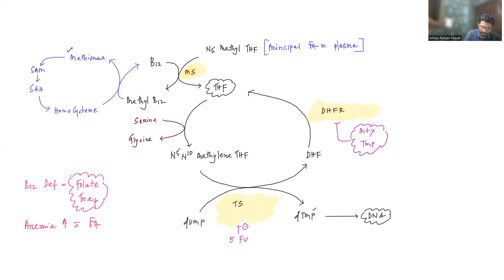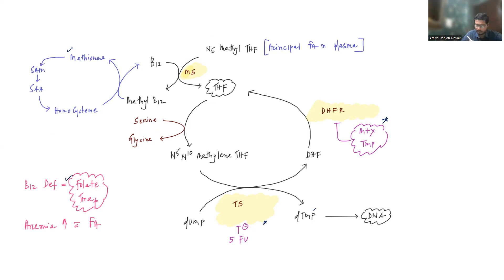We have also discussed the concept of folate trap. What I want to highlight in this lecture is the drugs that are inhibiting the enzymes. The enzyme dihydrofolate reductase can be inhibited by methotrexate and trimethoprim, and thymidine synthetase can be inhibited by 5-fluorouracil. These drugs can actually cause folic acid deficiency by inhibiting these enzymes.